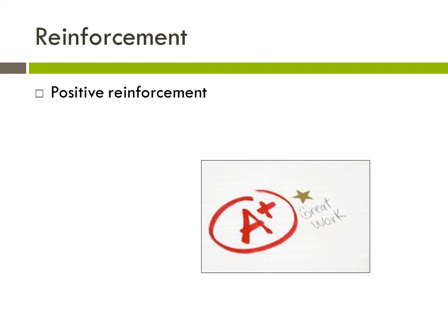Positive reinforcement is when we want to add something to increase the behavior. When you get something that you want, you want to repeat that behavior. For example, if a student wants attention and cracks a joke in class and the class laughs, that person will continue making jokes. Another example: students studying hard for an exam and receiving an A — the A is the positive reinforcement. The most common types are rewards and praise.